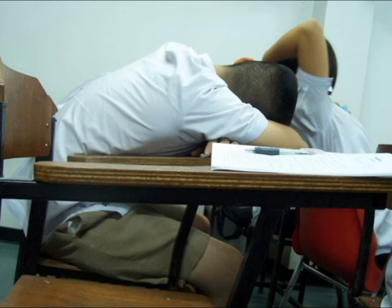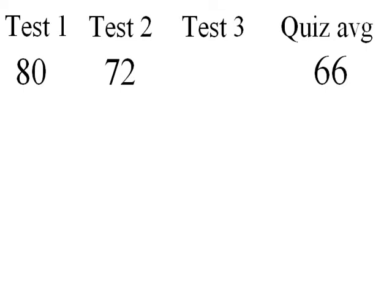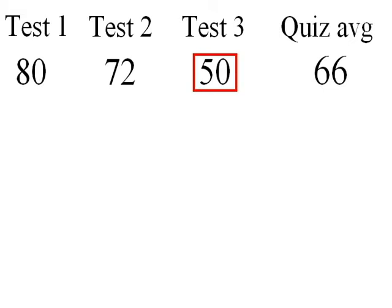So this is how it could go. Say you take the first two tests and get an 80 and a 72, and your quiz average comes out to be a 66 again. Then it's time to take the last test and you get a 50. Oh no! The 50 and your next lowest grade, the 66, combine for an average of 58.